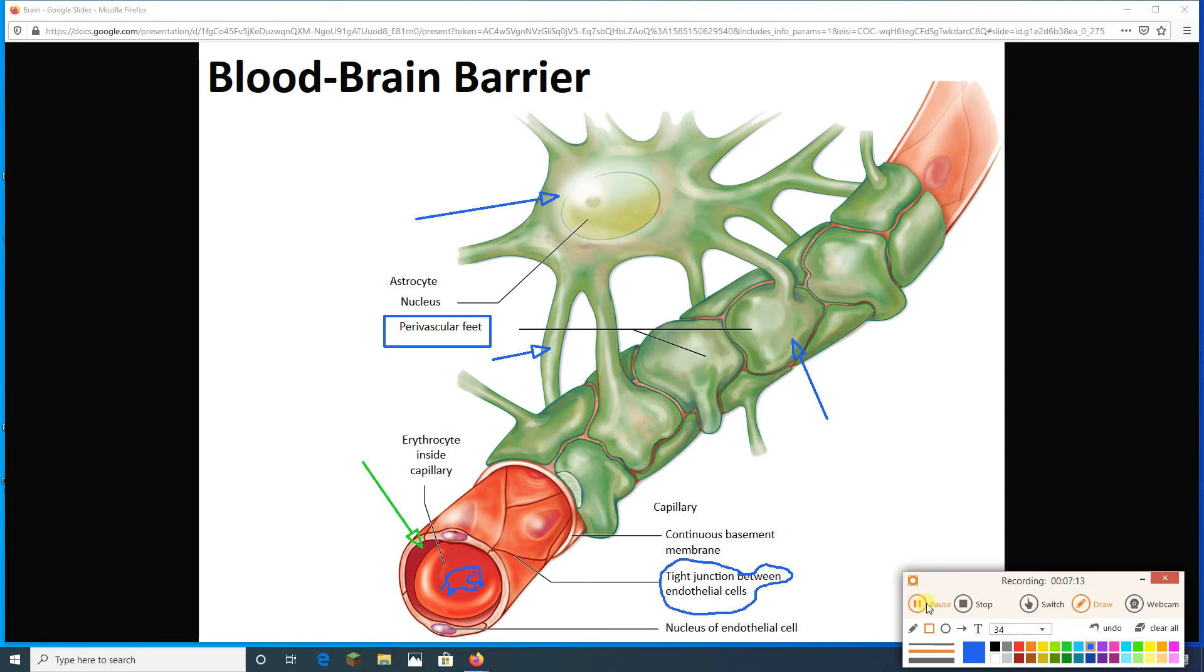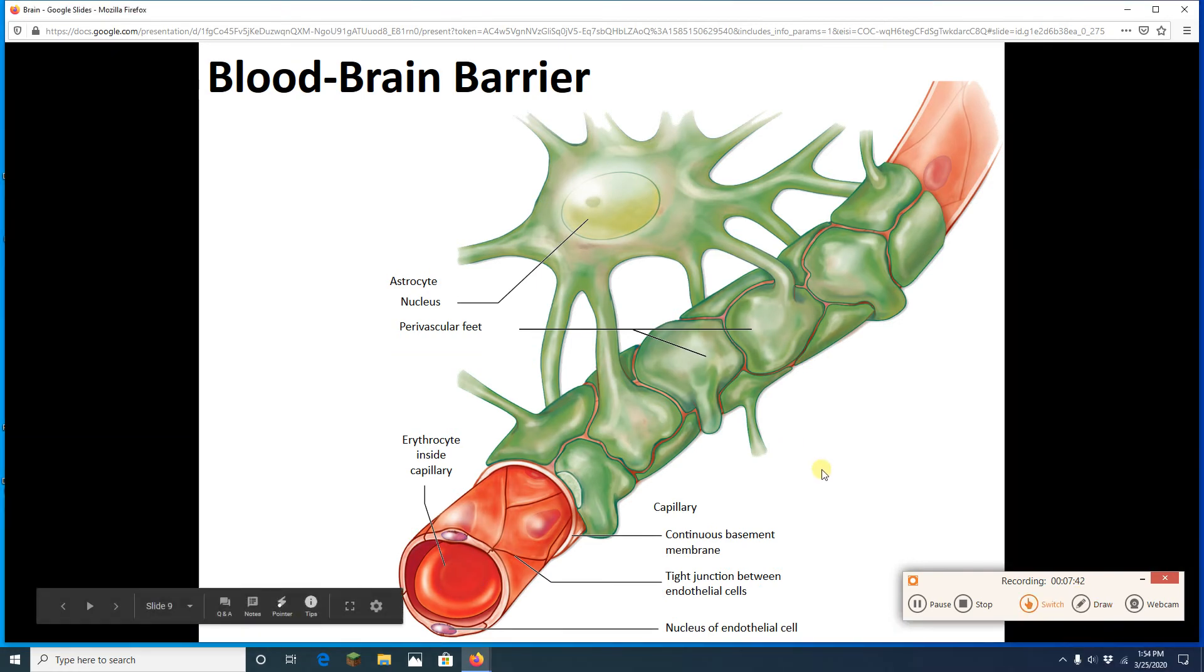All right. So, the combination of the astrocytes and the tight junctions are going to create the blood-brain barrier, which protects the CSF and thus the brain from any bad things like this elephant-shaped bacterium in the blood. All right. Let's get rid of all this stuff.